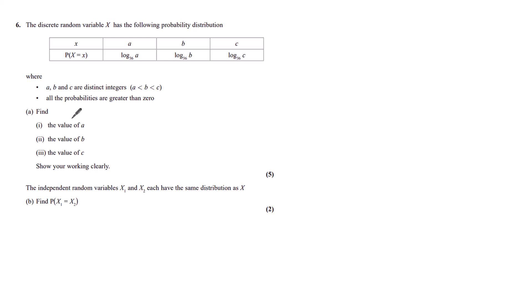Part a, find the values of a, b, and c, showing your working clearly. Right, so what can we start with? Well, this is a probability distribution, which means these three probabilities added together must equal 1.